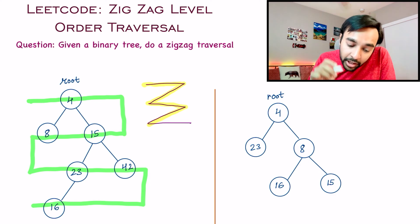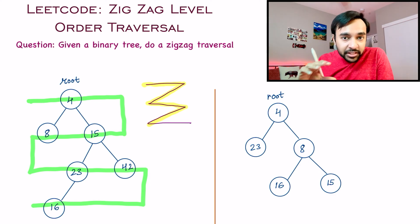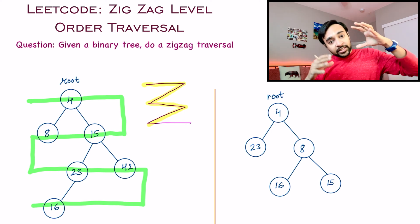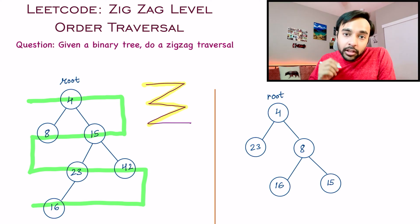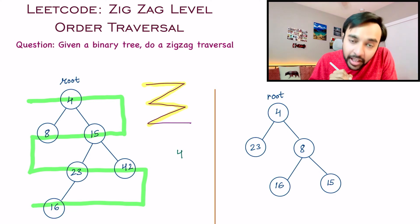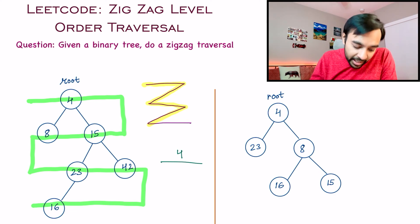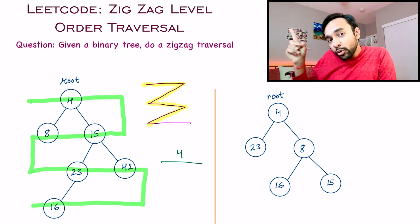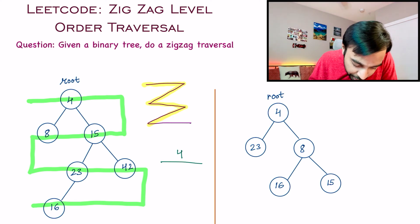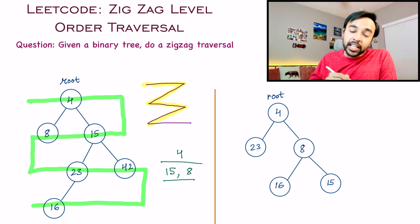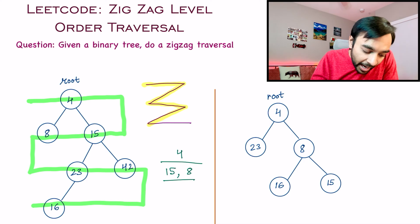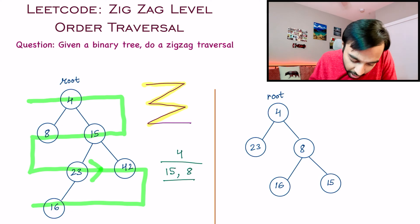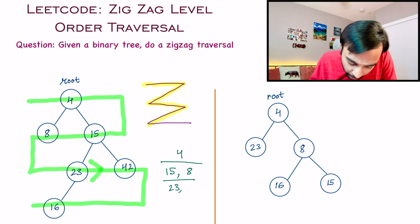To return your output you have to return all of these traversals in the form of a list of lists. The first level will just have the element 4. The next level has elements 8 and 15, but you have to go right to left, so the next level should look like 15, 8. Once again at the third level you travel left to right, so you add 23, 42.